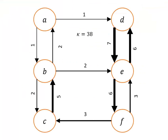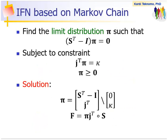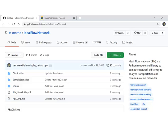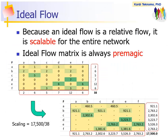For a small network, we can compute IFN manually. For a larger network, IFN can be computed through linear algebra of Markov chain or through optimization of maximum entropy. The Python code of IFN is available in GitHub.